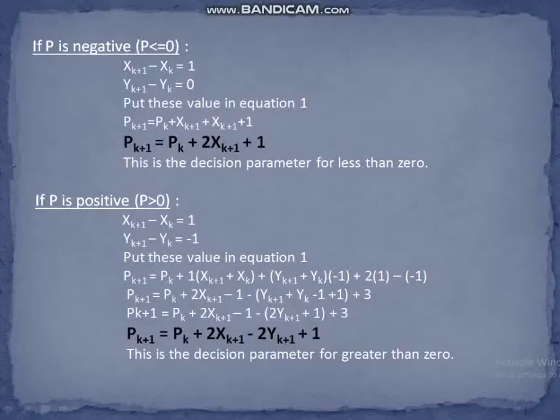If pₖ is positive — that is, the decision parameter is positive — the value of the x-coordinate will be incremented, but the value of the y-coordinate will be decremented. That is, xₖ₊₁ = xₖ + 1 and yₖ₊₁ = yₖ − 1. Putting these values into equation 1, we get pₖ₊₁ = pₖ + 2xₖ₊₁ − 2yₖ₊₁ + 1.